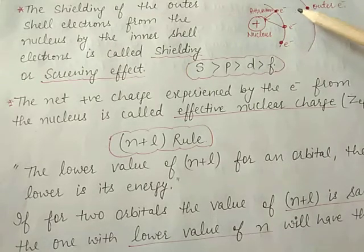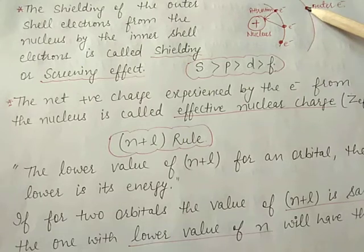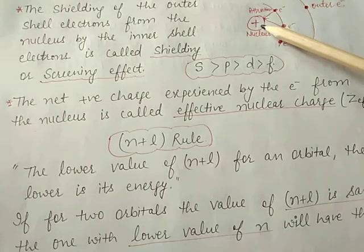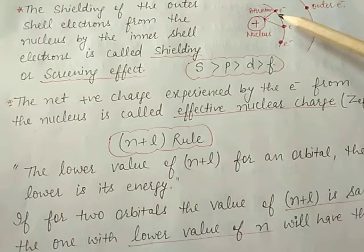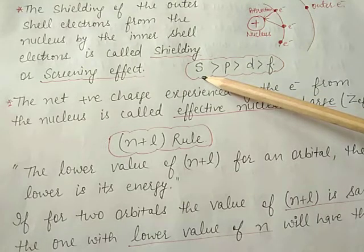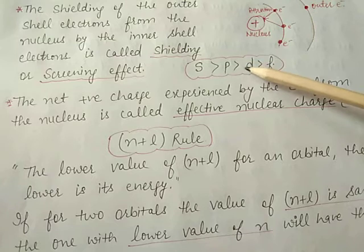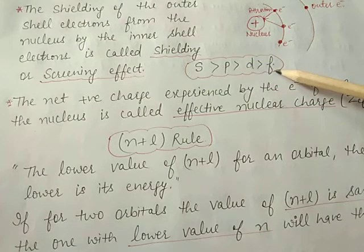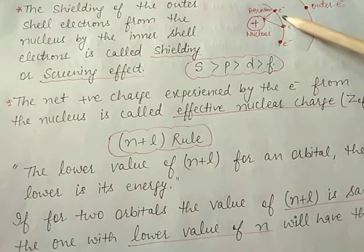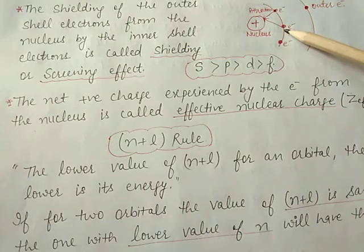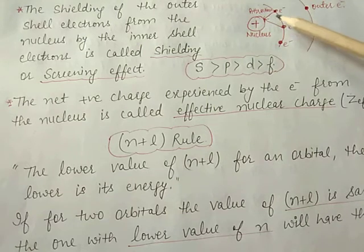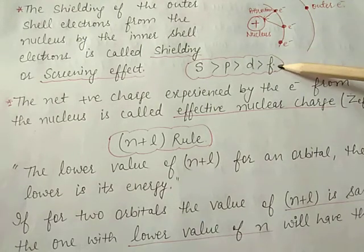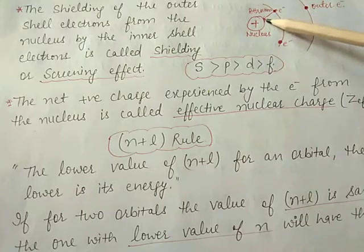When the outer electrons are shielded from the nucleus by the inner electrons, this is called the shielding effect. In case of s orbitals, the screening effect is greater compared to p, which is greater than d, and greater than f. This is because the s orbital is strongly and tightly bound by the nucleus, so it shows a greater shielding effect.